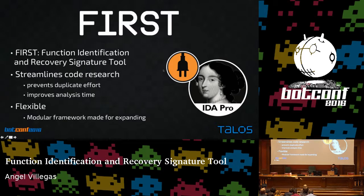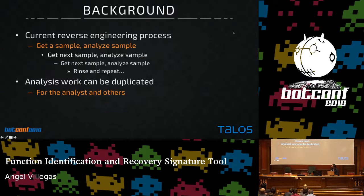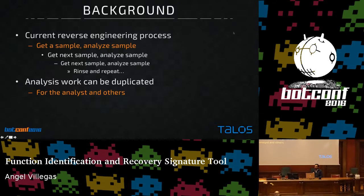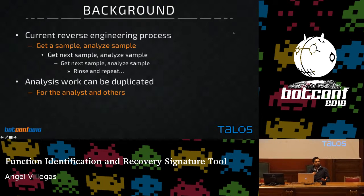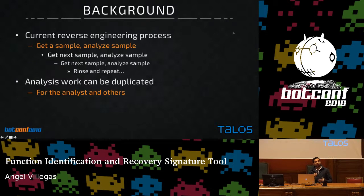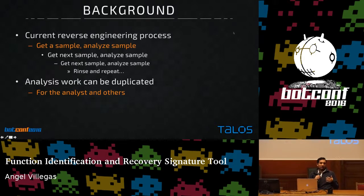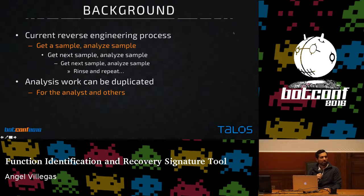Basically it's the same kind of process over and over again: get a sample, look at it. That sample may take maybe a day to look at in order to get some very specific information. We try to find and enumerate all the C2 commands and their corresponding actions, or figure out what the DGA is, program that up so we can blacklist IPs for a given botnet or malware family.